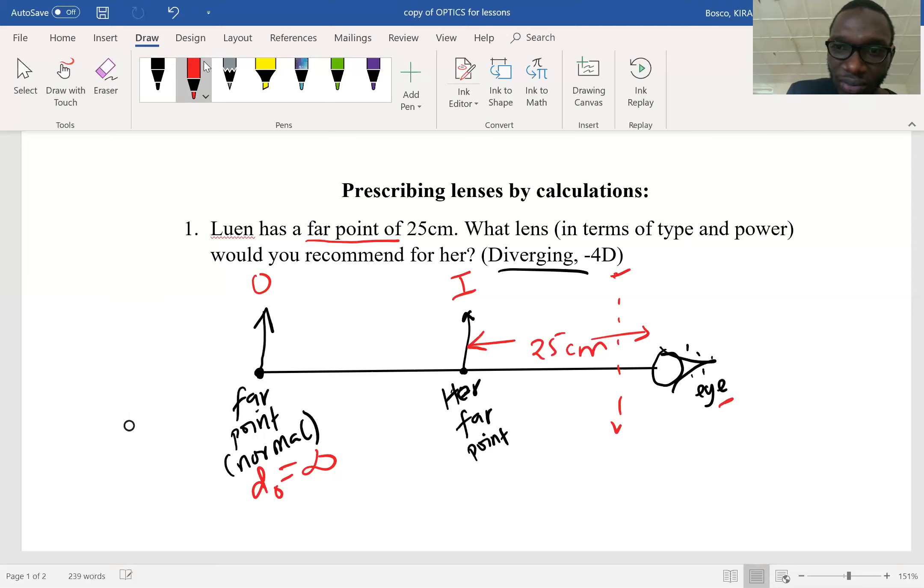So the lens, we don't know yet whether it's going to be diverging or converging, but let's see by calculation. Objects at infinity, we want to focus them to the far point of this lady, which is 25 centimeters.